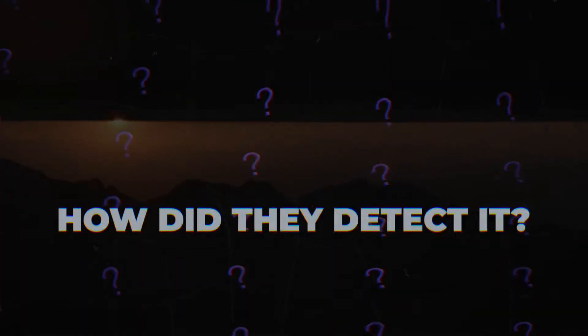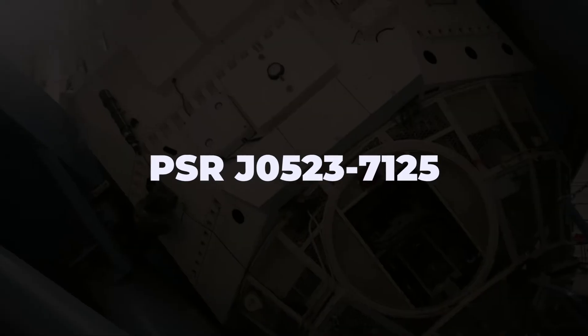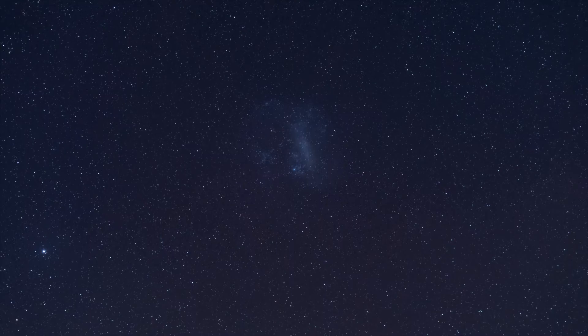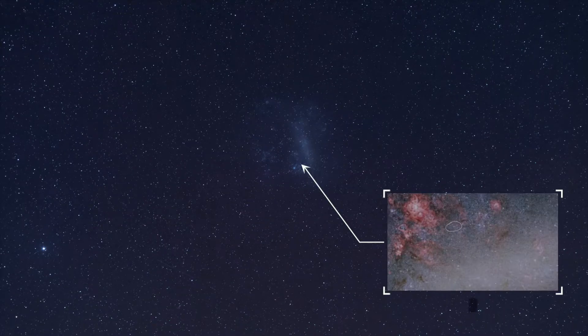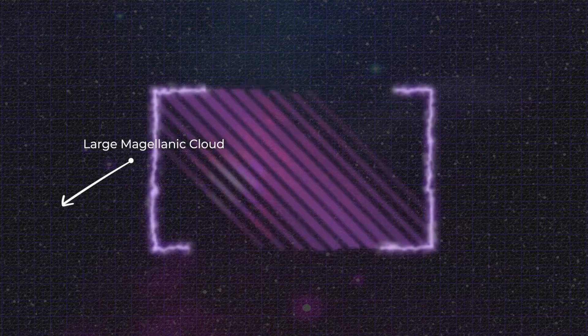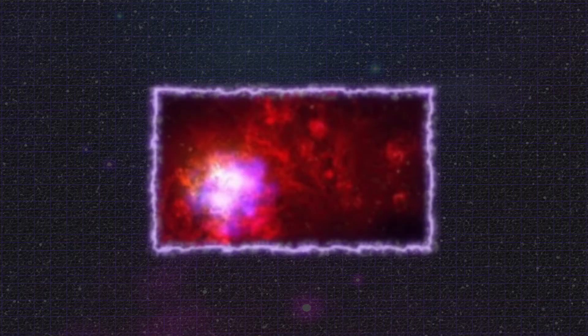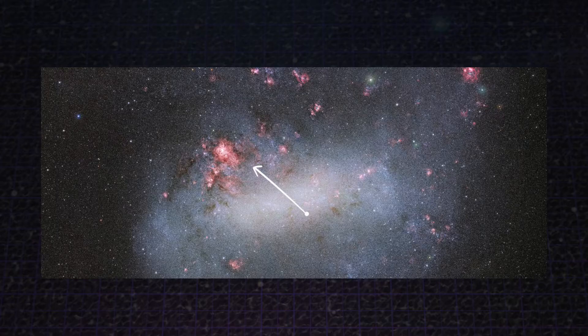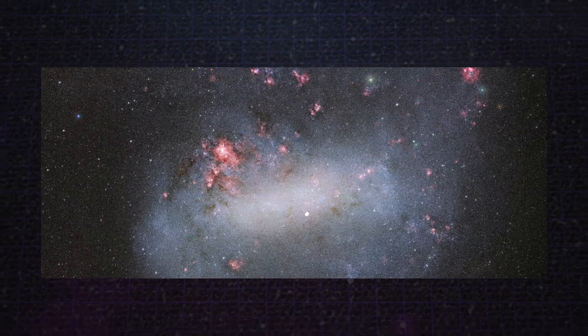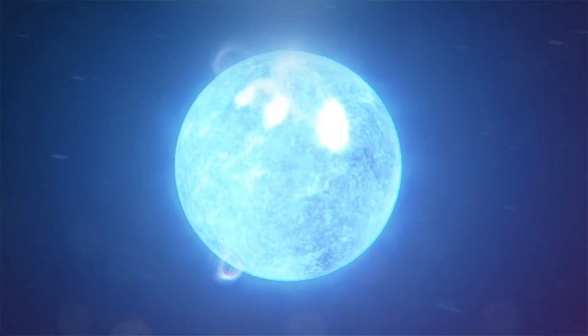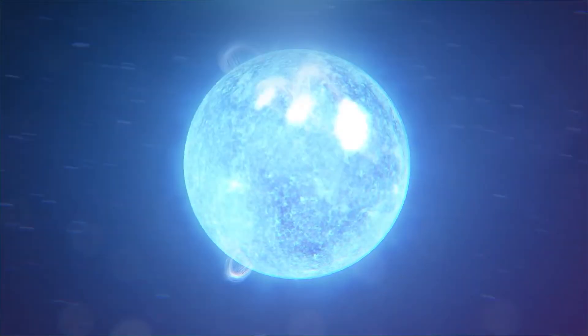The object that we now know as PSR J0523-7125 lives just over one degree from the center of the Large Magellanic Cloud, which is one of the satellite galaxies of the Milky Way. For quite a while, this object eluded classification as a pulsar star because it appeared just as a bright distant galaxy and was thought to be one. But recently, astronomers realized that this distant galaxy was really the pulsating corpse of a long dead star.